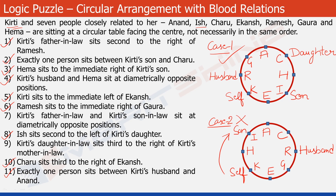Look at statement 1. It says Kirti's father-in-law sits second to the right of Ramesh. This is Ramesh, and second to the right of Ramesh would be Ekanch — so let's write father-in-law here. Statement 7 says that Kirti's father-in-law and Kirti's son-in-law sit at diametrically opposite positions. If Ekanch is the father-in-law of Kirti, the son-in-law of Kirti would be Anand, just opposite Ekanch — so let's write son-in-law here.